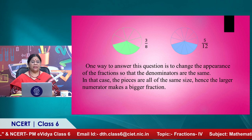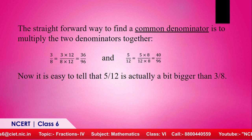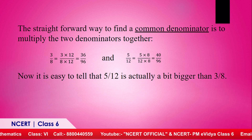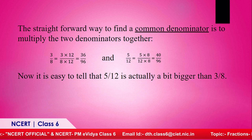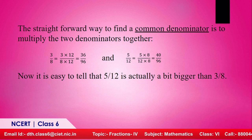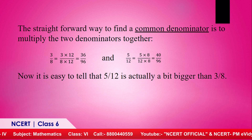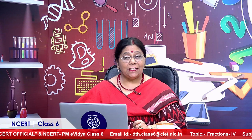One way to compare fractions with different denominators is to find a common denominator. For example, comparing three upon eight and five upon twelve: multiply the two denominators — eight by twelve gives ninety-six. Three upon eight becomes thirty-six upon ninety-six, and five upon twelve becomes forty upon ninety-six. Since the denominators are the same, we compare numerators: forty is greater than thirty-six, so five upon twelve is bigger than three upon eight.